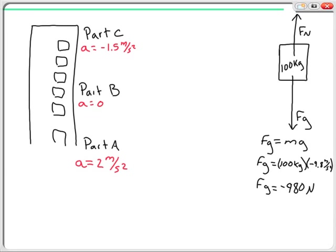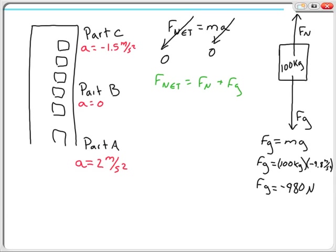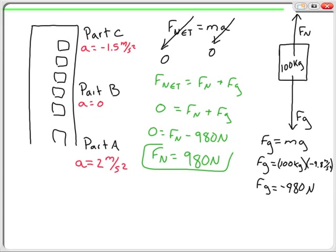For Part B, where the acceleration is equal to zero, F net is zero, and we can say FG equals FN. I'll show this mathematically: starting with Newton's second law, the acceleration is zero, so F net goes to zero. Switching to the sum of forces equation: 0 equals FN plus FG, which gives 0 equals FN minus 980 newtons. Therefore FN equals positive 980 newtons. That is my answer for Part B.